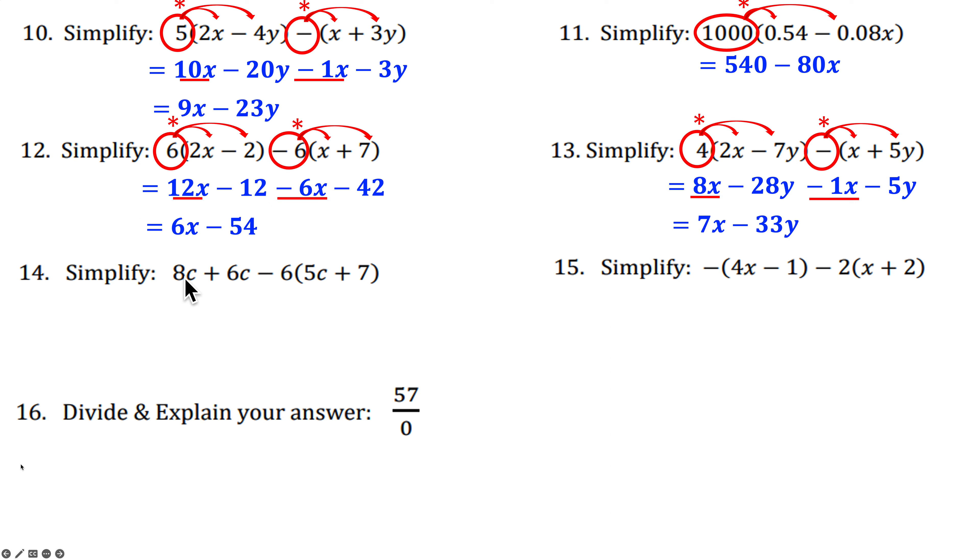Number 14. We can combine these two terms. 8C plus 6C. If you want to make that 14C. Great. Now take the minus 6 and distribute it. We're going to get minus 30C minus 42. Now we combine the two C terms here. 30 is bigger. So it's going to be a minus. And 30 minus 14 is 16. So minus or negative 16C minus 42.